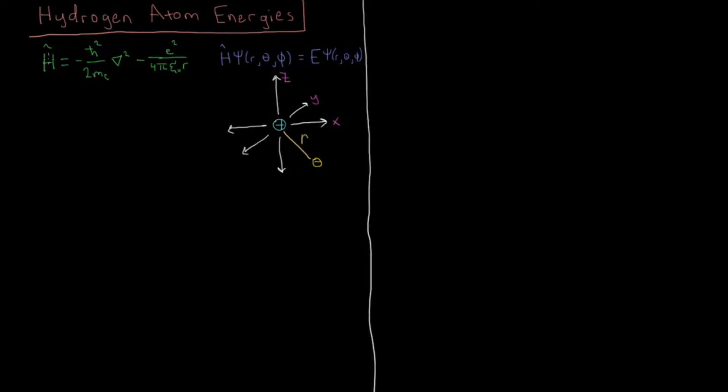So we have our Hamiltonian, which has the kinetic energy of an electron, minus h-bar squared over 2 times mass of the electron times del squared, the Laplacian operator in spherical polar coordinates, minus the Coulomb force acting between the electron and a proton which is fixed at the origin, which is minus e-squared over 4π epsilon naught times r, the distance between them.